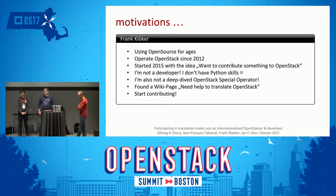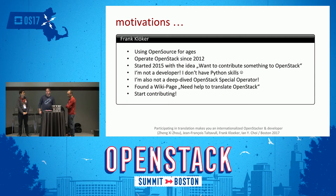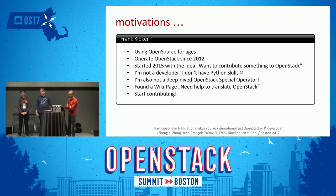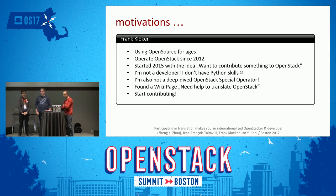Some of my motivations. I've been using open source software since 1995. We operate OpenStack at Deutsche Telekom since 2012. I started in 2015 with the idea that I want to contribute something to OpenStack. The problem is I'm not a developer, I don't have Python skills, and I'm not a deep-dived OpenStack special operator. Then I found the wiki page: need help to translate OpenStack. And I think it's an easy way to start contributing without knowledge in developing things.